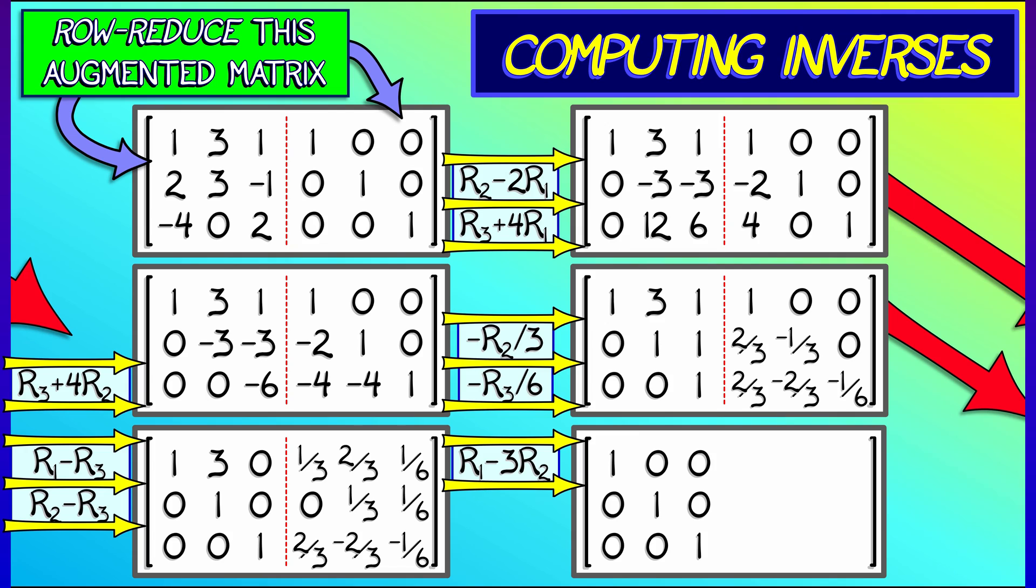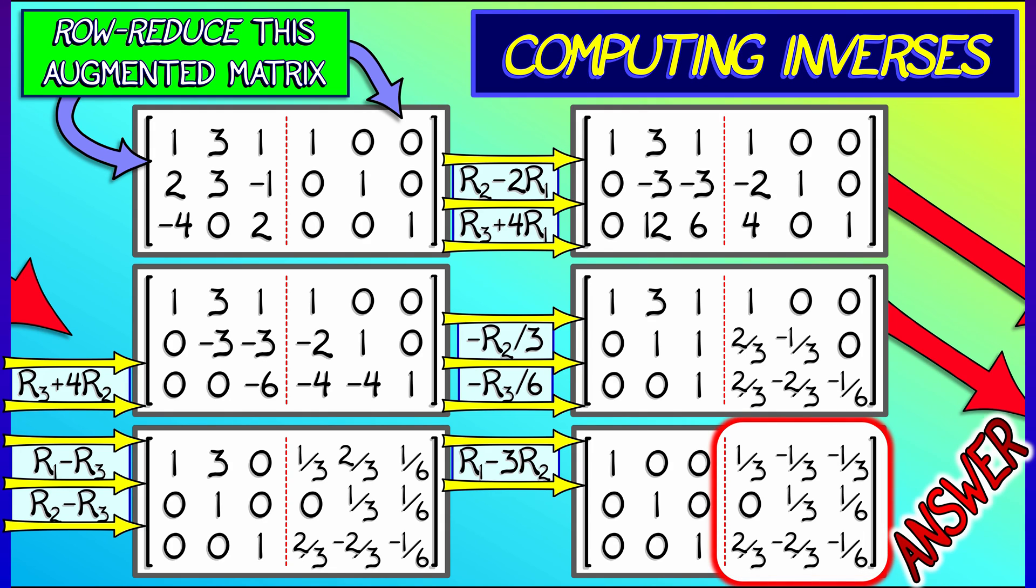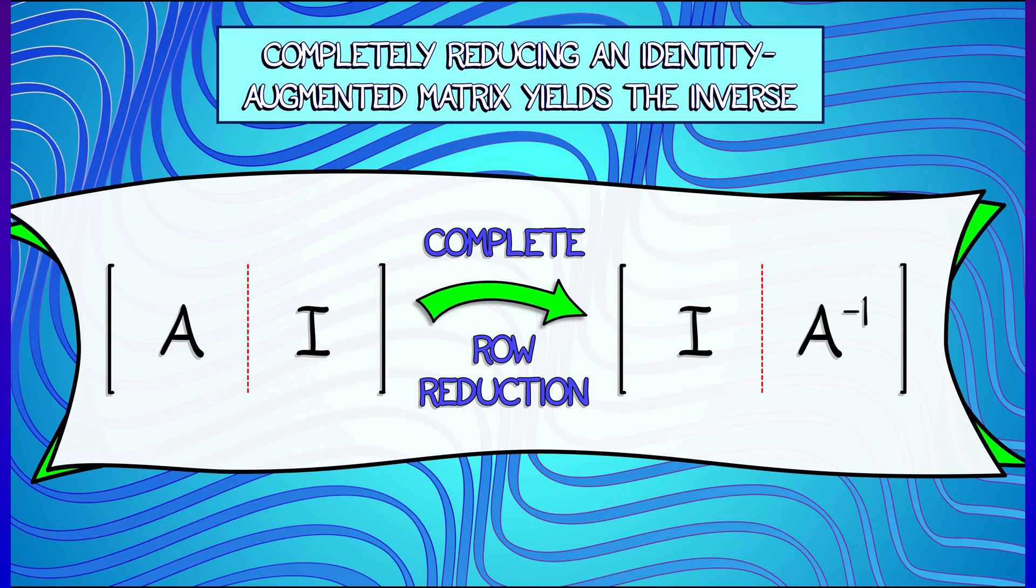I only have one thing left to do. That's subtract three times row two from row one. And on the left-hand side, we get the identity matrix. And, and so what? Oh, wait, that right-hand side is the answer. If you write out what all these equations mean in these three instances of Ax equals b, that is the inverse of A.